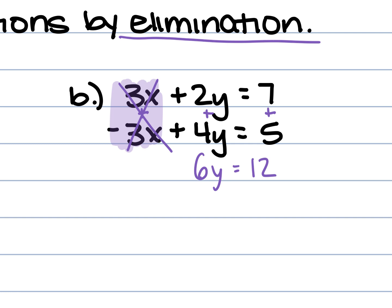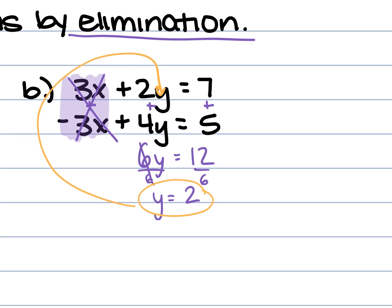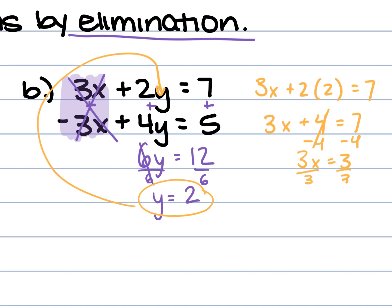Now we solve for y. Divide by 6, so y equals 2. How do we find x? Plug in y. I'm going to plug y into the first equation. So 3x plus 2 times 2 equals 7. 2 times 2 is 4, so 3x plus 4 equals 7. Subtract 4: 3x equals 3. Divide by 3, so x equals 1. How do we write our answer? (1, 2).